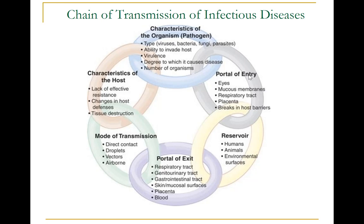Other portals of entry include the skin, mucous membranes, and blood. The portal of exit is the path by which a pathogen leaves its host and usually corresponds to the site where the pathogen is localized. For example, influenza viruses and Mycobacterium tuberculosis exit the respiratory tract; schistosomes through urine; cholera vibrios in feces. Some agents exit by crossing the placenta from mother to fetus, while others exit through cuts, needles in the skin, or blood-sucking arthropods such as with malaria. An infectious agent may be transmitted from its natural reservoir to a susceptible host either directly through contact or indirectly through vectors.